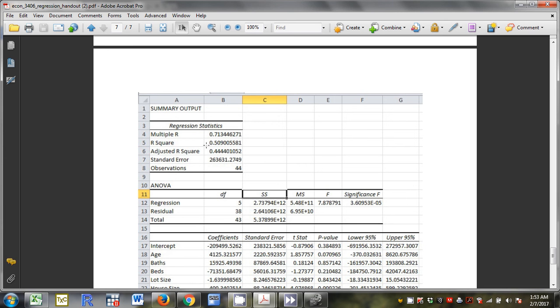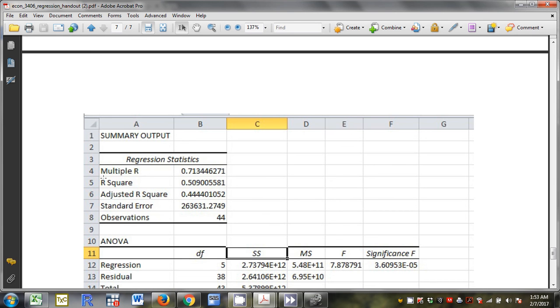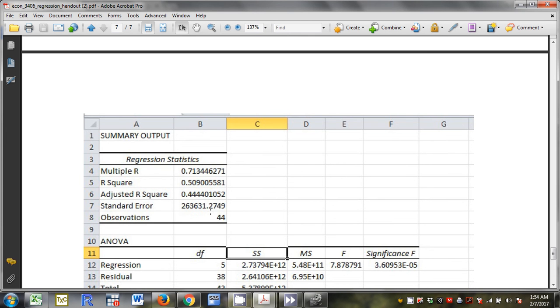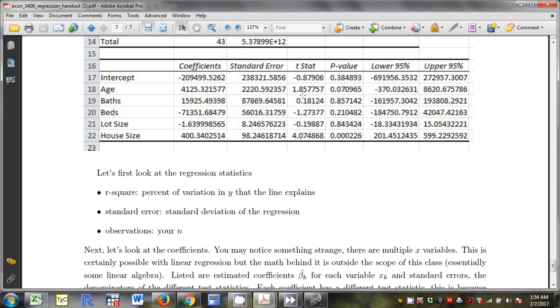Now when I read the regression output, the top here, this R squared. R squared is the percent of variation explained by the regression. Here I have price as the dependent variable and all these other guys as the independent variables. 50.90% of the variation in price is explained by these other variables. N, right here, 44. 263631.2749, standard deviation of the regression.